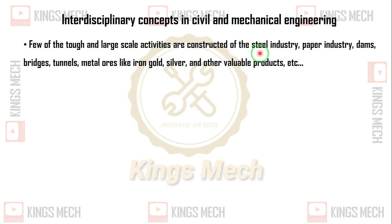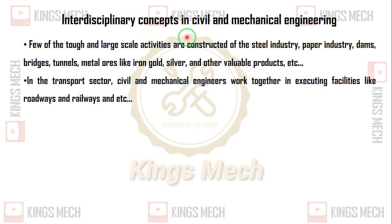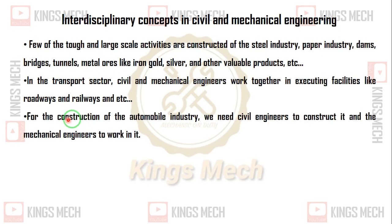A few tough and large-scale activities include construction of the steel industry, paper industry, dams, bridges, tunnels, and metal production such as gold and silver. Mechanical engineering and civil engineering are both important here. In transport, civil and mechanical engineers work together in executing facilities like roadways, railways, and so on. For the construction of automobile industries, civil engineers construct the facility and mechanical engineers work in it.